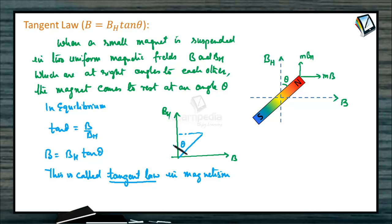B by BH will be equal to tan theta. The needle will come to rest at this particular angle. So B by BH is tan theta, B is equal to BH tan theta.